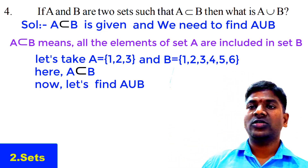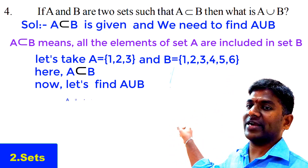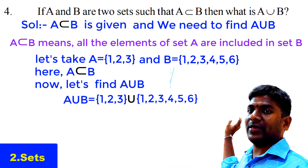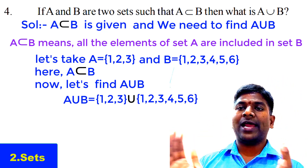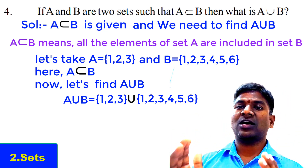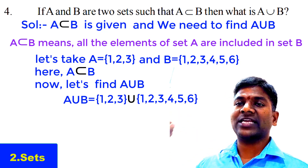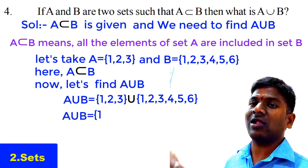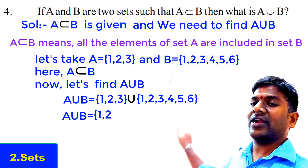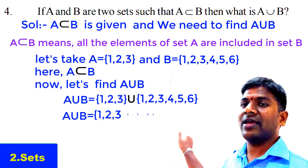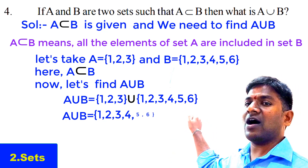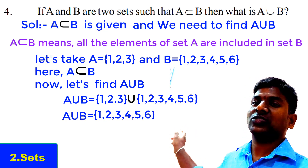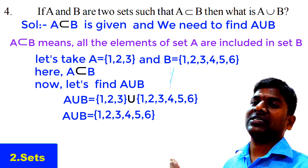Now we find A union B. A union B: we write the elements of Set A {1, 2, 3} union the elements of Set B {1, 2, 3, 4, 5, 6}. Union means all elements of A and B are elements of A union B. We take 1, 2, 3 from Set A. Then from Set B, elements may not be repeated in a set, so we cannot write 1, 2, 3 again — we take only 4, 5, 6 from Set B. Therefore A union B = {1, 2, 3, 4, 5, 6}.